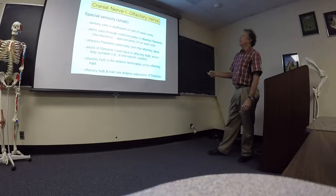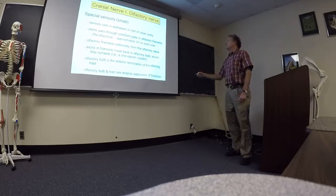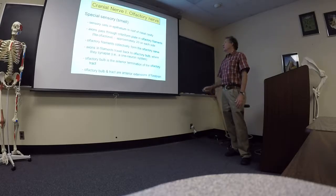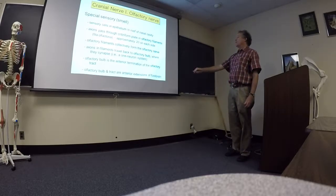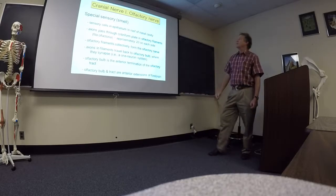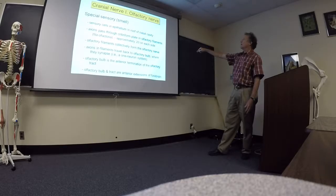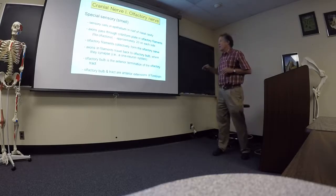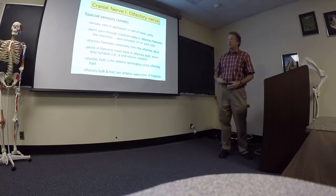And the olfactory bulb is the front end of this long sort of flat structure known as the olfactory tract which connects the forebrain to the olfactory bulb. And so these parts are actually extensions of the brain. So the olfactory nerves are the parts that are in the nasal cavity and then these filaments that go up to the bulb and the bulb and tract are bits of the brain that have extended out in the anterior cranial cavity to collect the information.